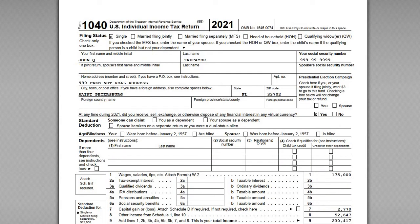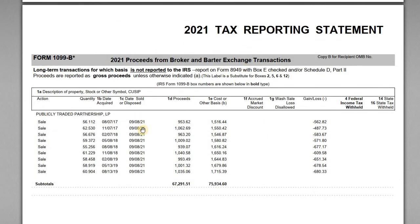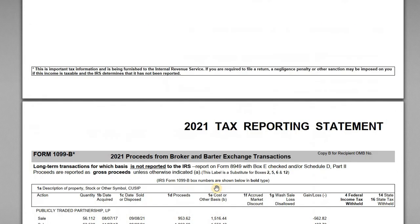I've got a sample 1099 here for a taxpayer which shows the sale of PTP units during the year. It's separated into short-term and long-term — our taxpayer acquired these units in pieces over a number of years. We have some sales reported as short-term capital gains with basis not reported to the IRS, and then the long-term dispositions on the second page with summary totals.